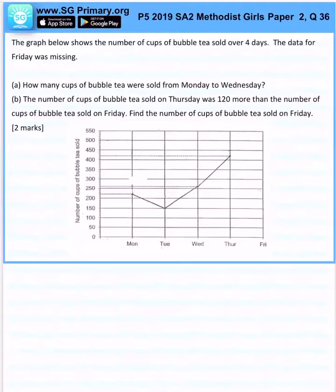The graph below shows the number of cups of bubble tea sold over 4 days. The data for Friday was missing. How many cups of bubble tea were sold from Monday to Wednesday?